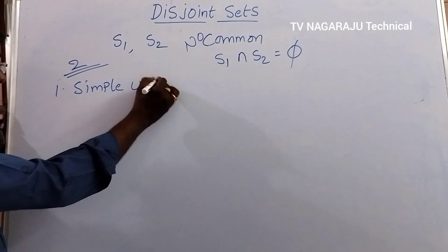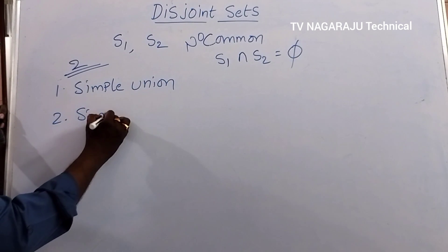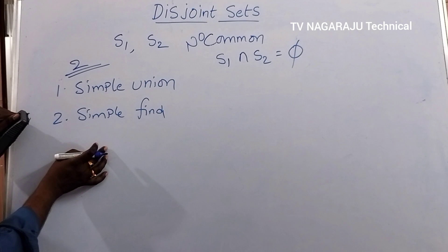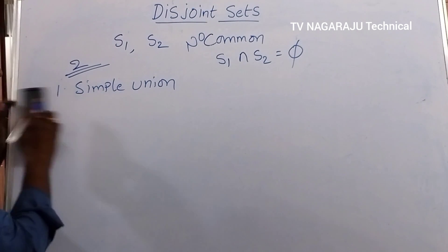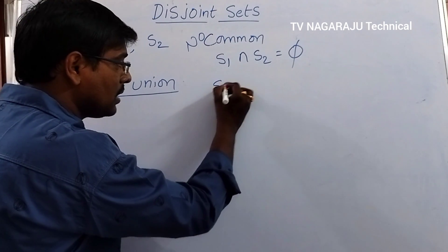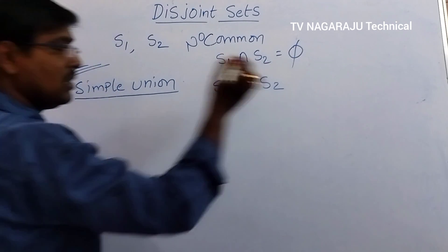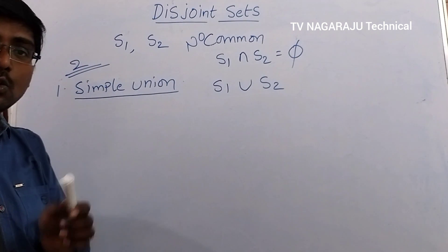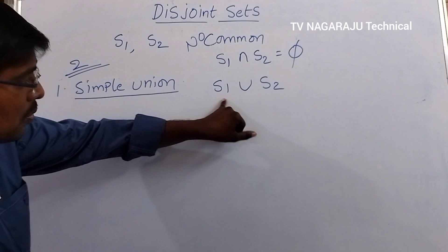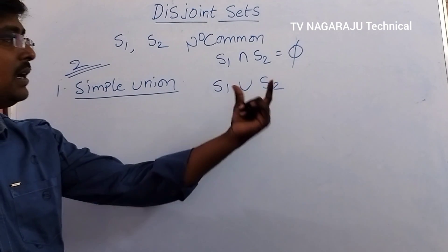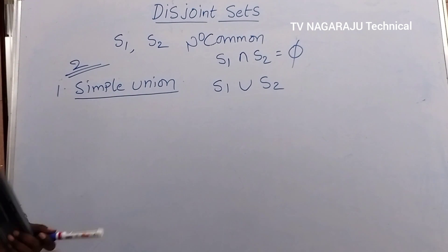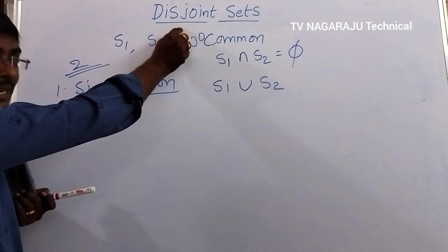On all disjoint sets we mainly perform two operations: the first one is the simple union operation and the second one is the simple find operation. The union operation — suppose S1 is one set and S2 is another set — after performing union, the result contains all the available elements of both S1 and S2. It simply combines the two sets together as a single set.